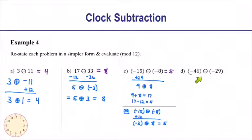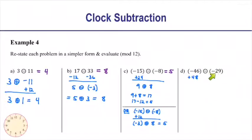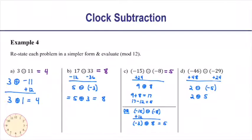For part D: negative 46 circle-minus negative 29. Add 48 to the first number and 24 to the second. Negative 46 plus 48 is 2; negative 29 plus 24 is negative 5. Minus negative 5 becomes plus 5, so we have 2 circle-plus 5, which adds up to 7. So negative 46 circle-minus negative 29 is 7.